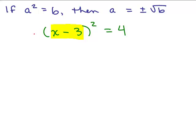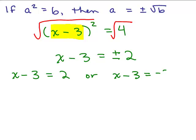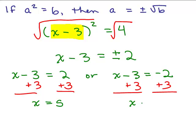We have x minus 3 squared equals 4, so we can use the square root property and take the square root of both sides. The square root of x minus 3 squared gives x minus 3, and remember to put plus or minus on the right side. The square root of 4 is 2, so x minus 3 equals plus or minus 2. Break this into two separate equations: x minus 3 equals 2, or x minus 3 equals negative 2. Adding 3 to both sides gives x equals 5, or x equals 1.